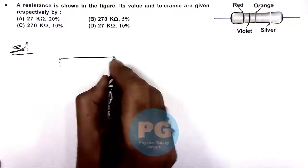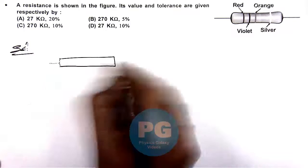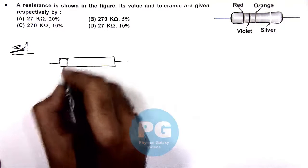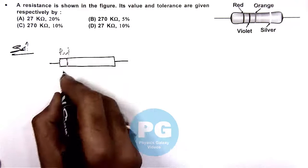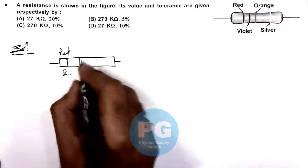So let us once again see the bands on the resistance. The first band is a red band for which the color code we consider as 2, we already studied.